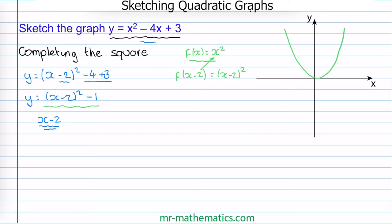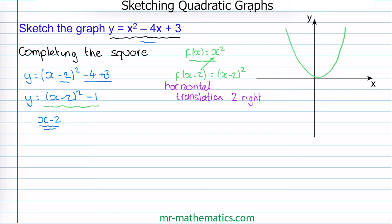So f of x minus 2 is a horizontal translation where we move the function 2 units to the right. So here's f of x — we're going to move it 2 units to the right and this x value is now at 2.